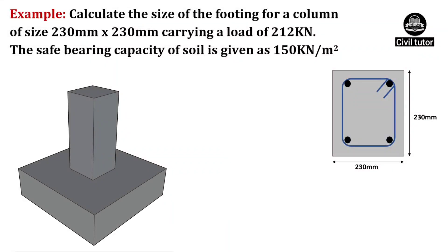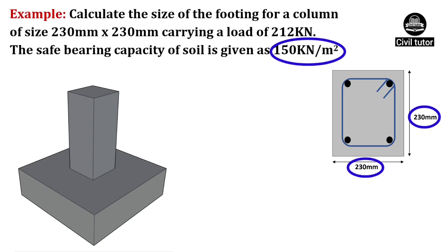Let's quote an example in this regard to make it clear. Suppose we need to calculate the size of the footing for a column of size 230 mm x 230 mm, which is carrying a load of 212 kN. The safe bearing capacity of soil is given as 150 kN per meter square.